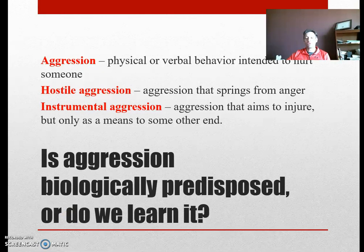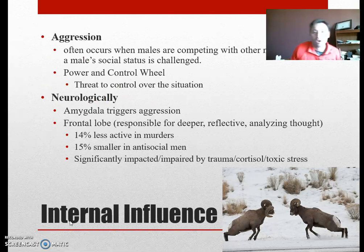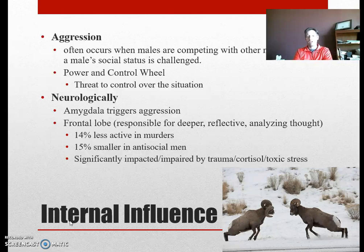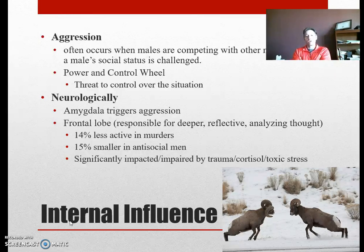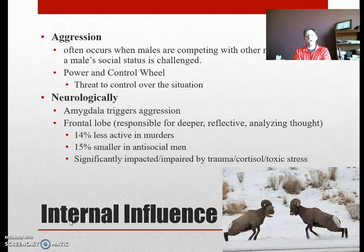Is aggression biologically predisposed or do we learn it? Aggression often occurs when males compete with other males — not just in our species — or when a male's social status is challenged. Neurologically, the amygdala triggers aggression and tends to shut down the frontal lobe when chronically stressed. The frontal lobe is 14% less active in murderers and 15% smaller in antisocial men. Childhood trauma also significantly impairs growth of the amygdala.